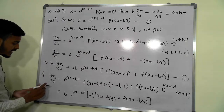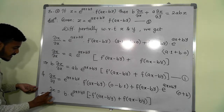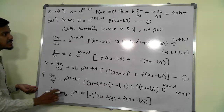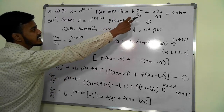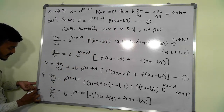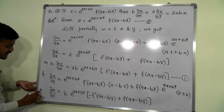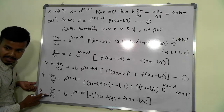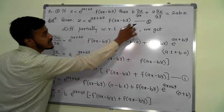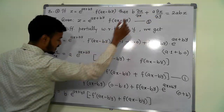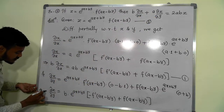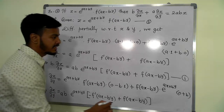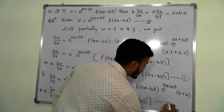Now we have ∂z/∂y. Multiply this by a: a times ∂z/∂y equals ab · e to the power (ax + by), in bracket: minus f′(ax − by) plus f(ax − by).